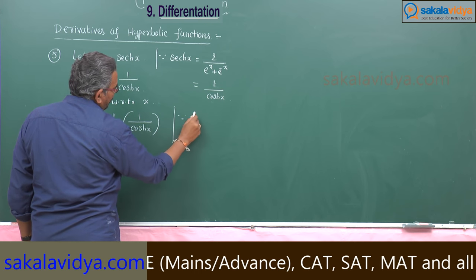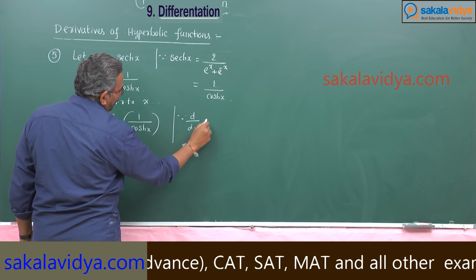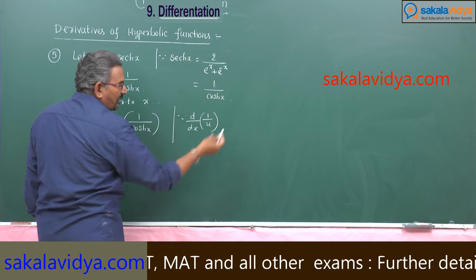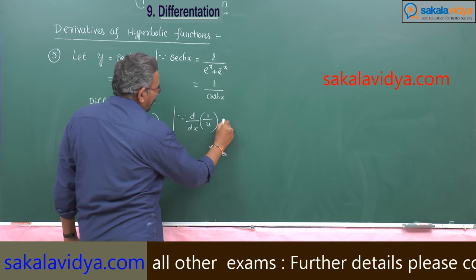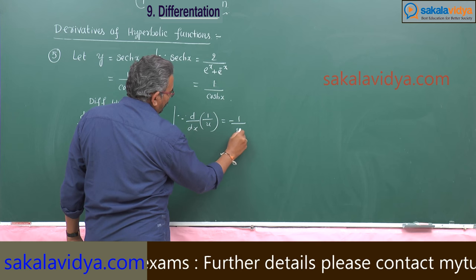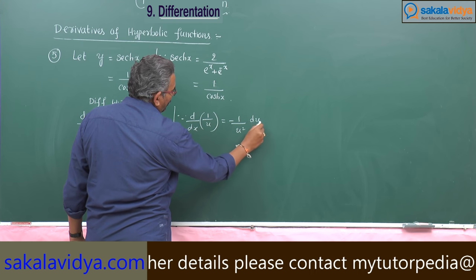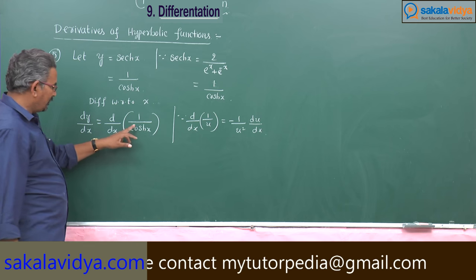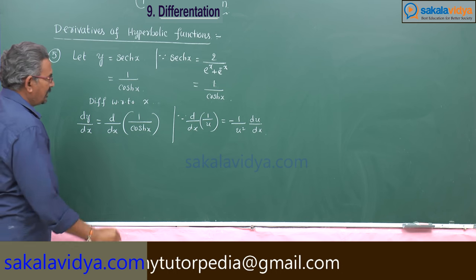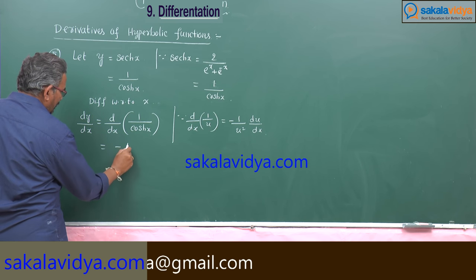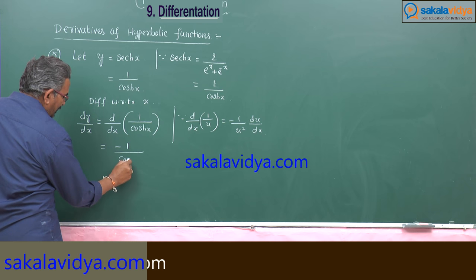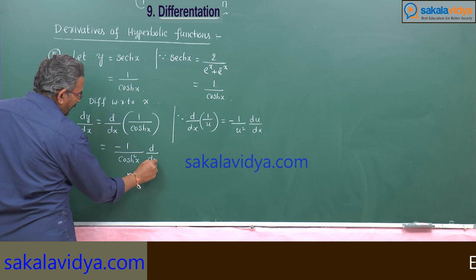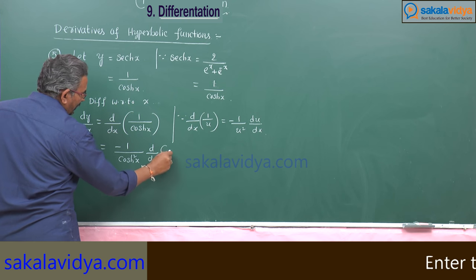We have the formula: d by dx of 1 by u, where u is a function of x, equals minus 1 by u squared into du by dx. Similarly, u stands for cosh x here. So this will be minus 1 by cosh squared x into d by dx of cosh x.